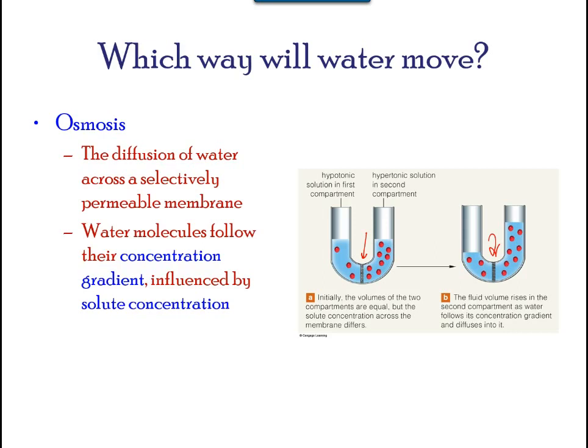Osmosis is a special case of diffusion. Water, like other substances, moves from an area of high concentration to one of lower concentration. Imagine a beaker with a semi-permeable membrane separating the two sides or halves.